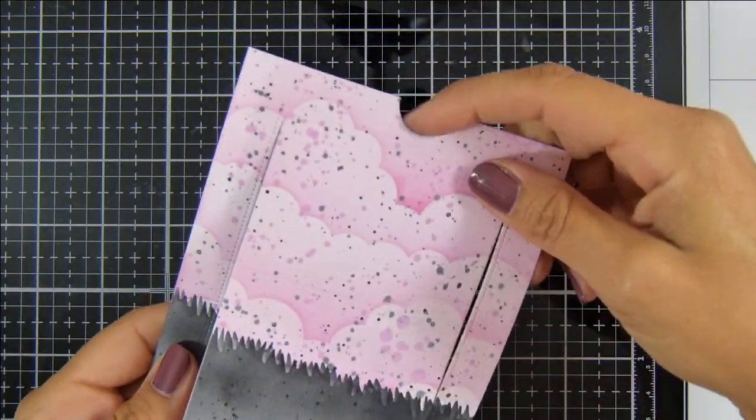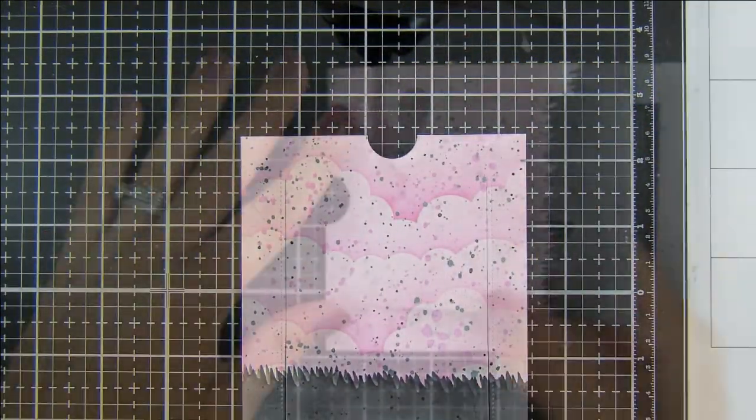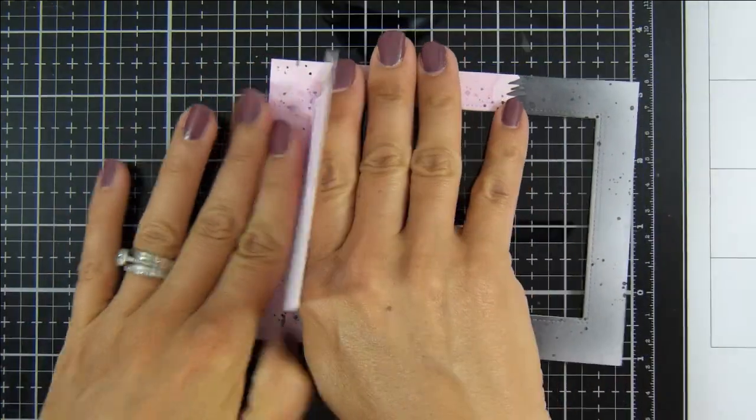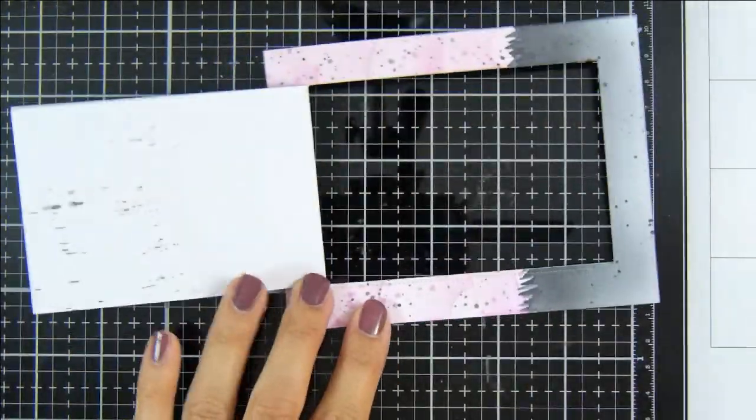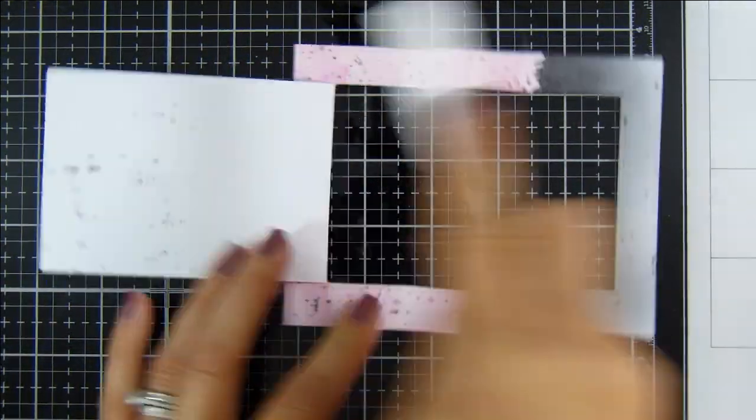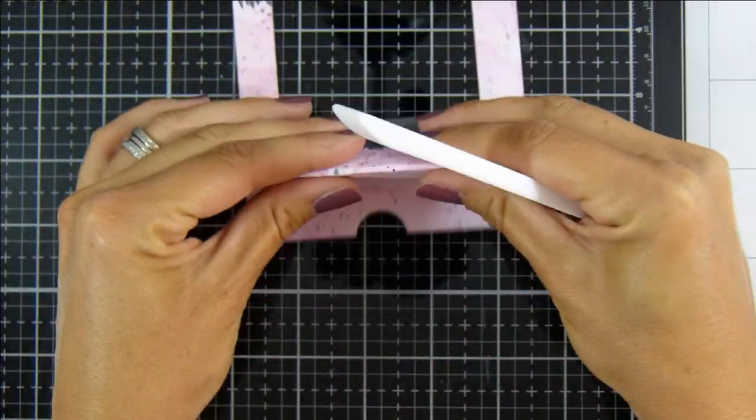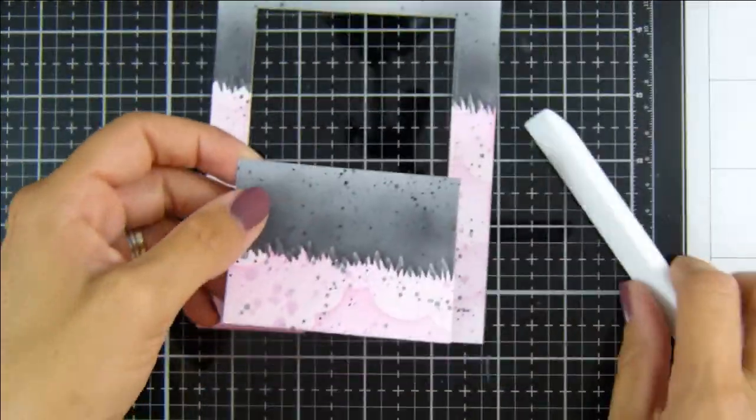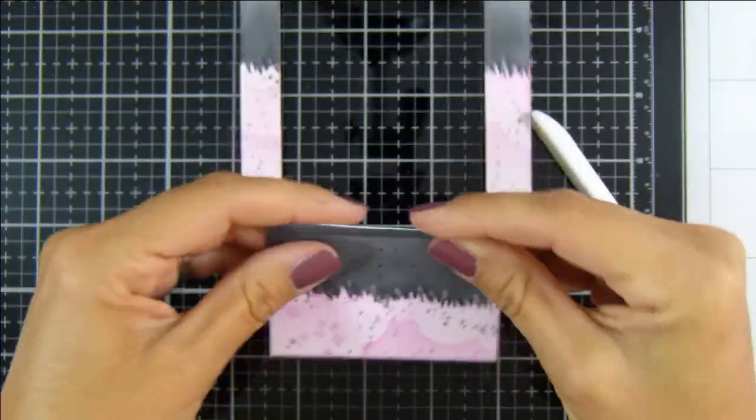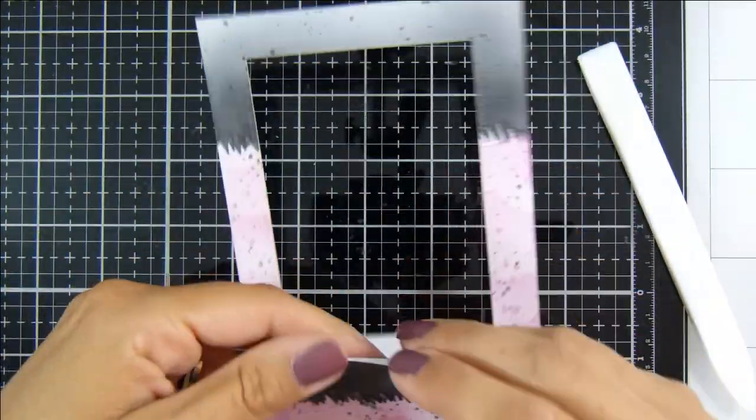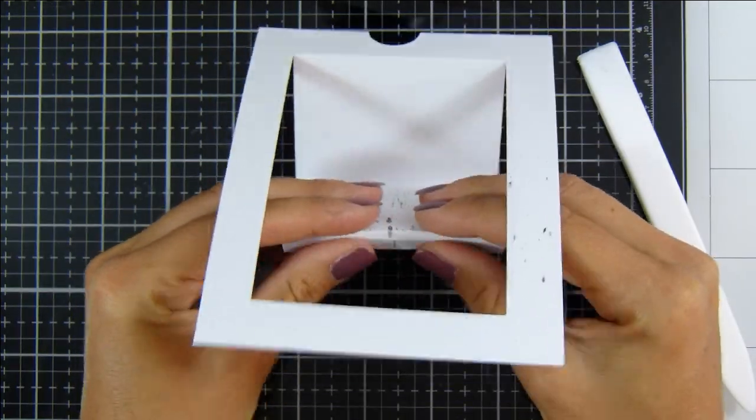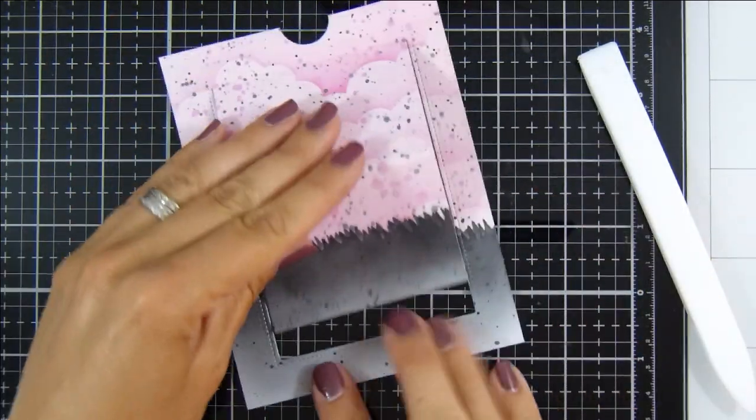Voila! We have our rectangle which is cut three sides of the way round, and the die also scores this top line, which I am now burnishing with my bone folder. I'm just gently bending in the middle the other score line, and lastly, this small flap at the bottom. This is what is going to adhere to our pulley tab in a moment.